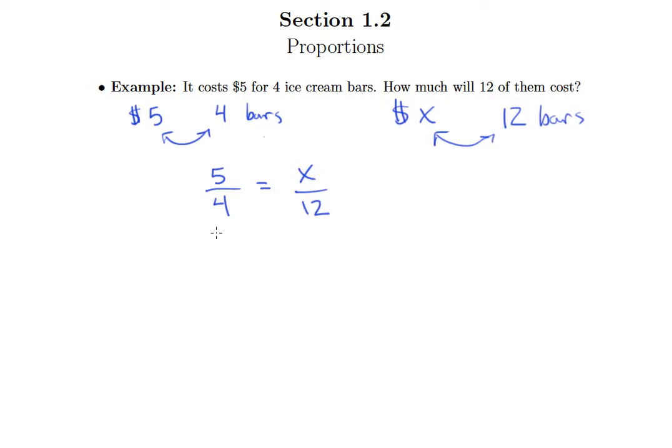So we know that comparing five dollars to four bars is going to equal comparing X dollars to 12 bars. Now the real key here is that whatever is happening in this fraction, the same sort of thing is happening over here. So notice we have dollars on top in both fractions, and in both fractions we have the number of bars on the bottom.